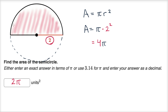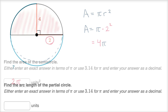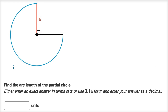Let's do another example. Here, instead of area, we're asked to find the arc length of the partial circle. And that's what we have here in this bluish color, right over here — find this arc length.